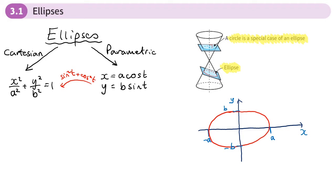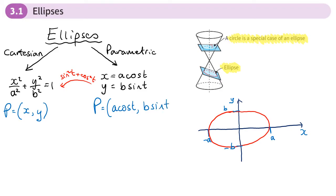Those are the equations in parametric and Cartesian form. We also want the general points on the ellipse. In Cartesian form, a general point P on the ellipse is just (x, y). In parametric form, a general point on the ellipse is (a cos t, b sin t), where these values of a and b are the same values as in the equations.